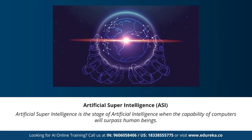The last stage is artificial super intelligence — when the capability of computers will surpass human beings. This is currently seen as a hypothetical situation, as depicted in movies and science fiction books. Machines taking over the world is all artificial super intelligence. We don't currently have any machine capable of thinking or reasoning better than a human being, though given our current pace, machines may not be very far from reaching this stage.